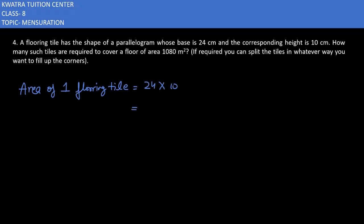Since it is a parallelogram shape, area equals base into height, so it is 240 centimeter square. Now the area of the floor is 1080 meter square. You can see there is a difference here — the tile area is in centimeter square and the floor area is in meter square.